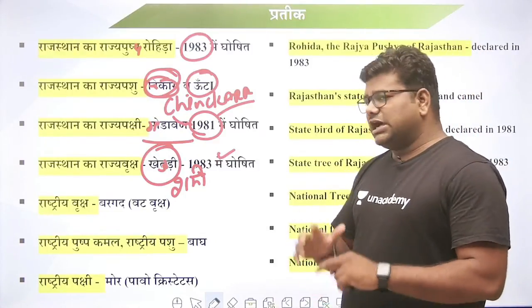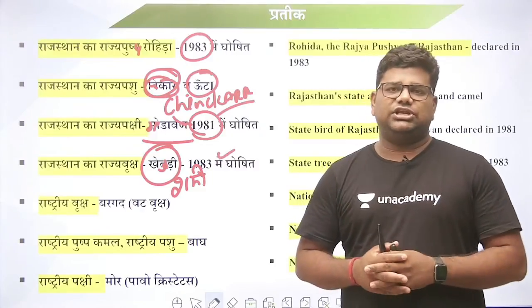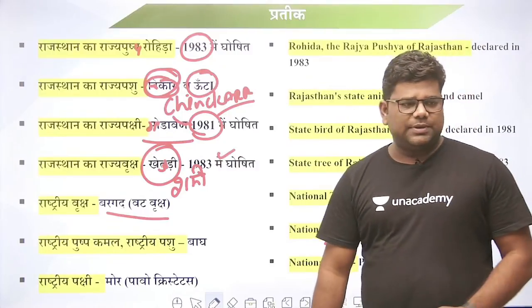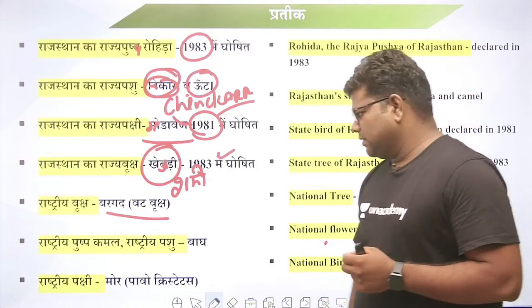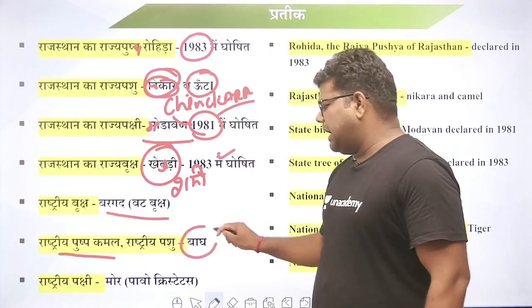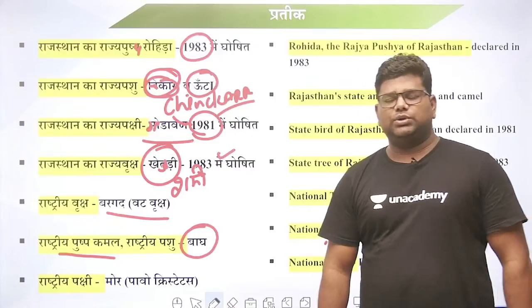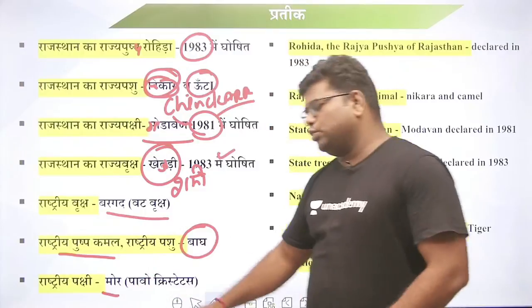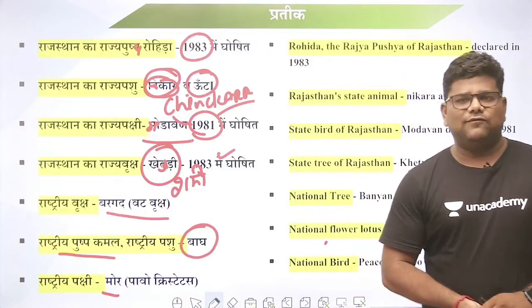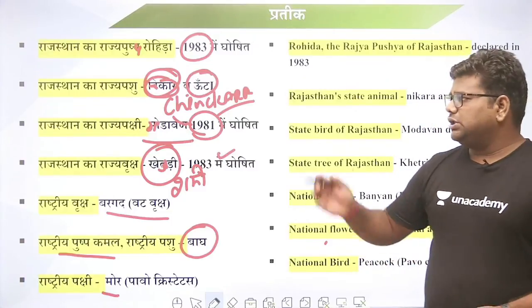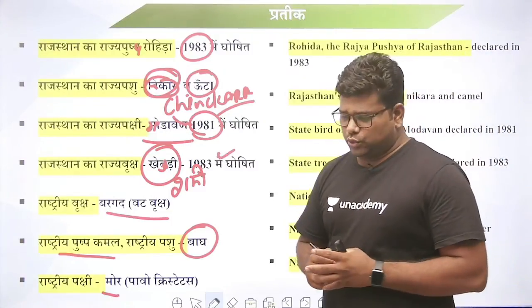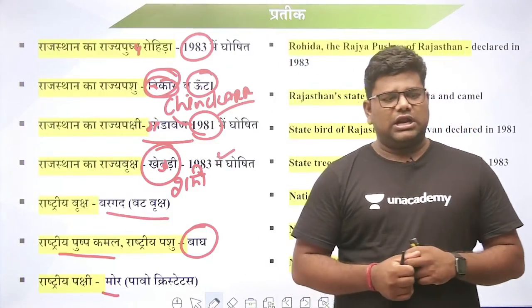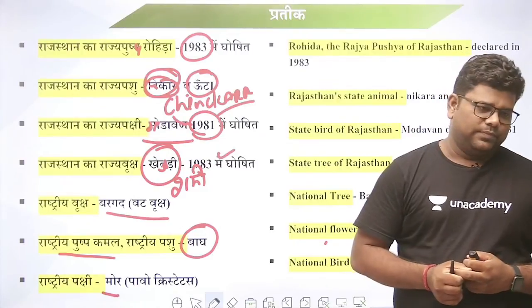खेजड़ी को 1983 में राज्य वृक्ष घोषित किया गया था। राष्ट्रीय वृक्ष बरगत का पेड़ है, जिसे वट वृक्ष भी कहते हैं। राष्ट्रीय पुष्प कमल है, राष्ट्रीय पशु बाघ है, जिसका scientific name है Pavo cristatus - नहीं, वो मोर का है। राजस्थान का राज्य पुष्प रोहिड़ा है, राज्य पशु दो हैं - चिंकारा और ऊँट, और राज्य वृक्ष खेजड़ी है।